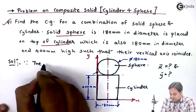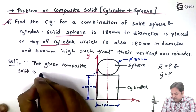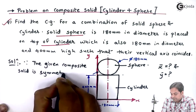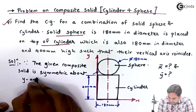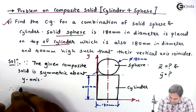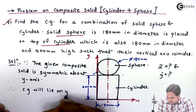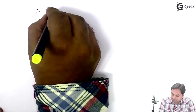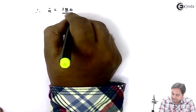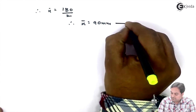Since the given composite solid is symmetric about the Y axis, therefore the CG will lie on the Y axis, and hence X̄ = half of 180 = 90 mm. That is our first answer.